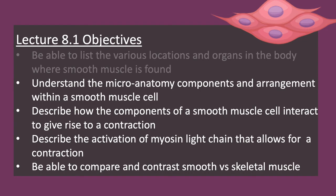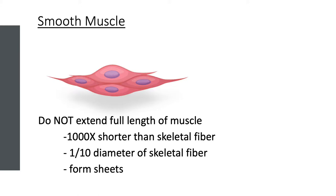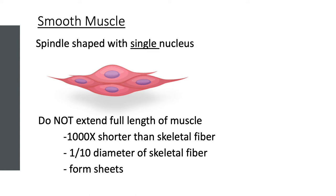We'll turn now to the microanatomy of smooth muscle. How many smooth muscle cells are shown here? There are in fact four, and we can identify them because they each have a single centrally located nucleus. We can also see this characteristic spindle shape, or what we call a fusiform shape — a lot of fish are shaped this way. It tends to look like a football or a spindle. These smooth muscle cells are a thousand times shorter than skeletal muscle fibers and have one-tenth the diameter of a skeletal muscle fiber.